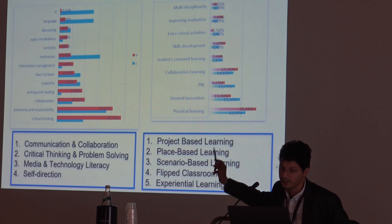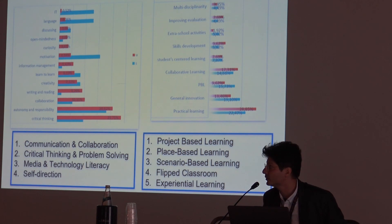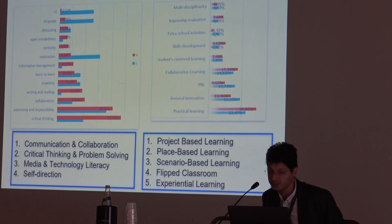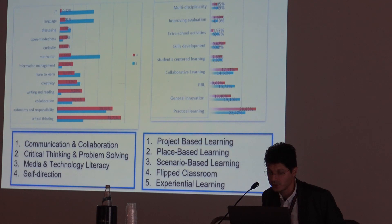For example, here in blue you can see the high school teachers' answers, and here you can see the university teachers' answers. There are big differences, especially about critical thinking and autonomy. In the end, we found out that the four skills students need are: communication and collaboration, critical thinking and problem solving, information and economic literacy, and self-direction.